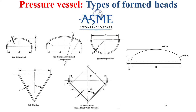These types are characterized by certain characteristic dimensions, which are the inner diameter, the outer diameter, the height of the straight face (SF), the total height H, the crown radius (CR), and the knuckle radius (KR). The knuckle is associated with the torical shape existing between the straight face and the crown of the formed head.